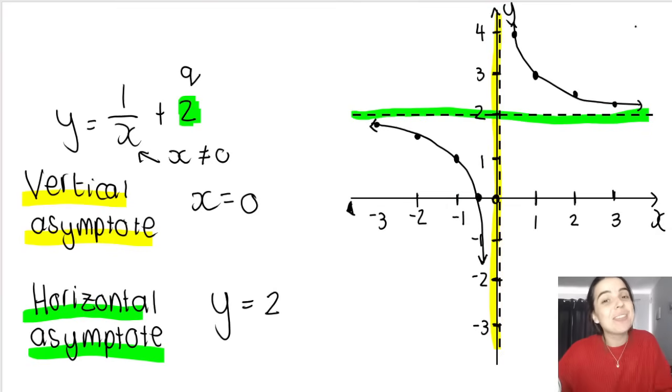If you have a look at this function over here, the function y is equal to 1 over x plus 2, we can immediately see that our horizontal asymptote will be at the line y is equal to 2. Our vertical asymptote will be at the line x is equal to 0, again, because x cannot be 0.